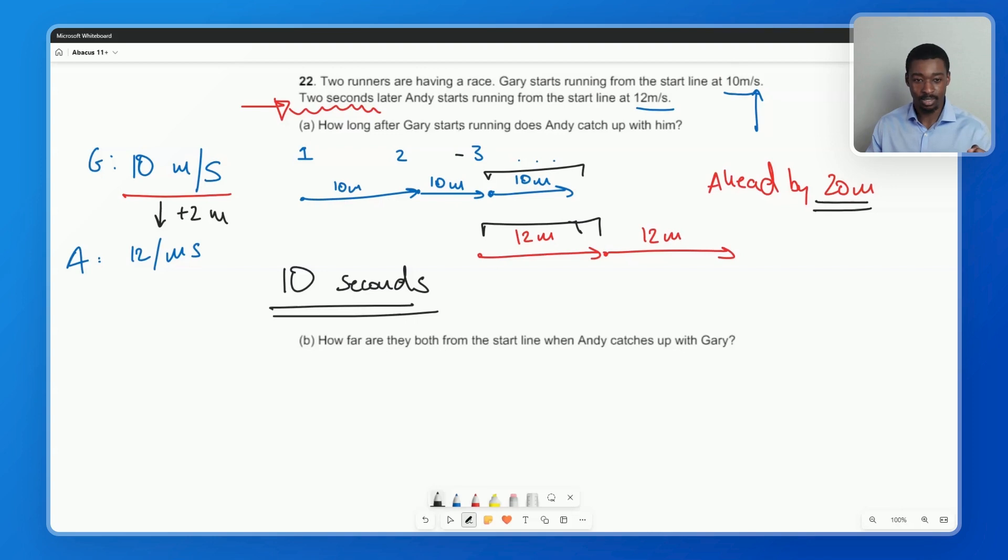So that's the answer to part A. The answer is 10 seconds. 10 seconds after Gary starts. Because remember, he's running those two extra meters every second. 10 meters per second versus 12 meters per second.